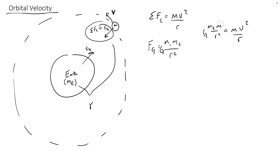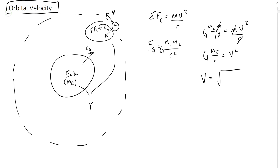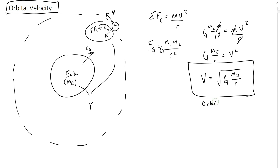The mass of the Moon cancels out, and one of the r's cancels out. What we're left with is G times the mass of the Earth divided by the distance between their centers equals v². Taking the square root, we get that the orbital velocity is equal to the square root of the gravitational constant times the mass of the thing being orbited — in this case the Earth — divided by the distance of the orbit r. This is our equation for orbital velocity.